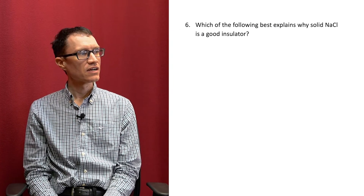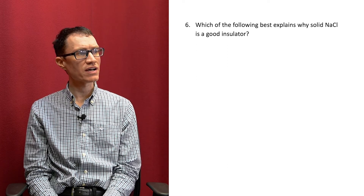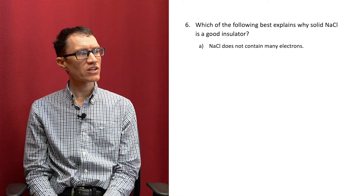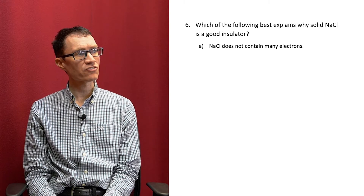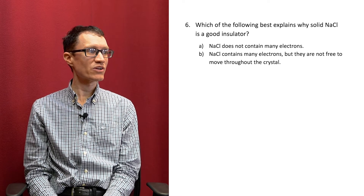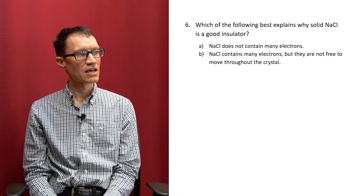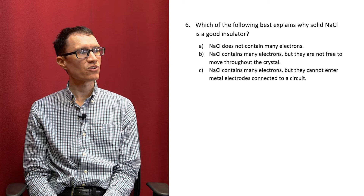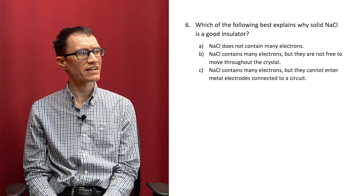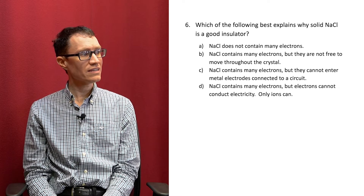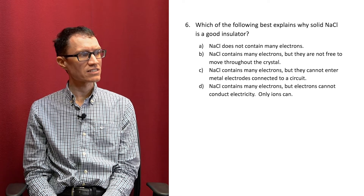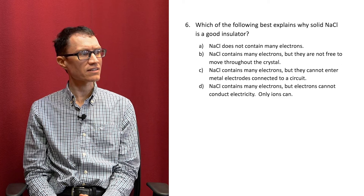Question 6: Which of the following best explains why solid sodium chloride is a good insulator? A: Sodium chloride does not contain many electrons. B: Sodium chloride contains many electrons, but they're not free to move throughout the crystal. C: Sodium chloride contains many electrons, but they cannot enter metal electrodes connected to a circuit. Or D: Sodium chloride contains many electrons, but electrons cannot conduct electricity — only ions can.